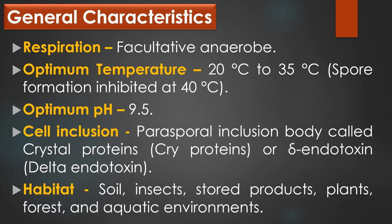The optimum pH of Bacillus thuringiensis is 9.5. Regarding cell inclusions, it contains a parasporal inclusion body called as crystal proteins or cry proteins or delta endotoxins. Regarding the habitat, Bacillus thuringiensis can be found in soil, insects and their habitats, stored products, plants, forests and aquatic environment.